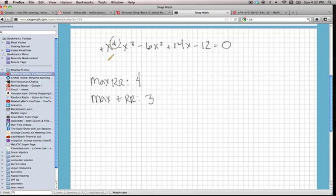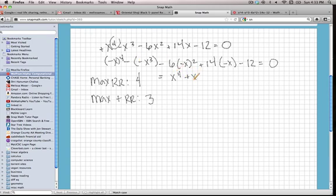Okay, if we simplify this, it looks like all of the even powers are going to stay the same sign that they were up here, and all of the odd ones are going to change. So we will have x to the 4th plus x to the 3rd minus 6x squared minus 14x minus 12 equal to 0. And it looks like we have only 1 sign change here. So the maximum number of negative real roots we're going to have is 1.